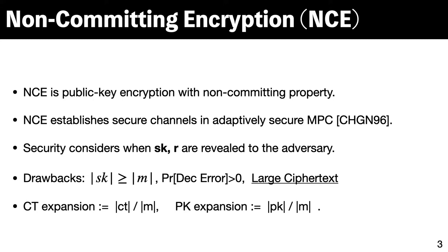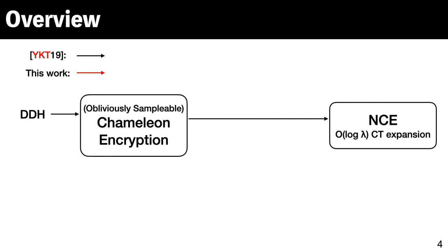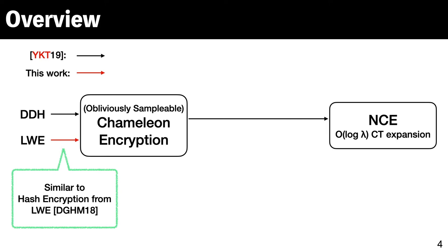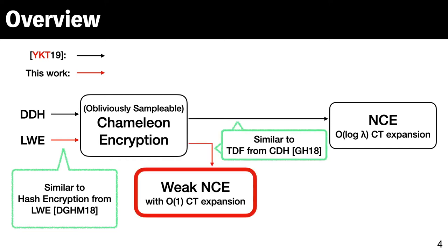So we focus on ciphertext expansion, that is the length of ciphertext per each message bit. Public key expansion is also defined in a similar way. In our previous work at the last STOC/CRYPTO, we constructed an NCE scheme with order log-lambda ciphertext expansion from a resampling-based version of Chameleon encryption. We instantiated it based on the DDH problem. In this work, we instantiate it based on the LWE problem. Basically, it is a combination of a lattice-based Chameleon hash function and an LWE-based hash encryption proposed by Döttling et al.